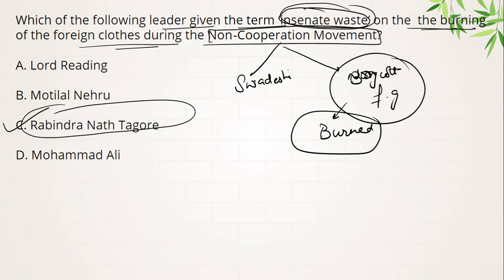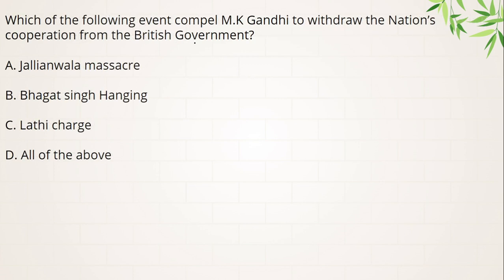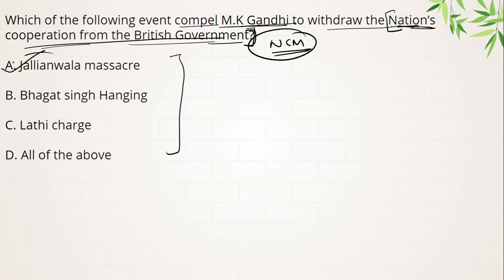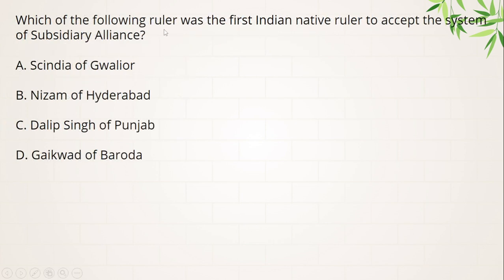Next question — which of the following event compelled Mahatma Gandhi to withdraw the nation's cooperation from the British government? This question is placed to confuse — 'nation's cooperation from the British government' means where Indians stopped cooperating with the British, which is basically the non-cooperation movement. And that was as a result of the Jallianwala Bagh massacre — that is why the non-cooperation movement was later started. Dhyan mein rakhenge aap.